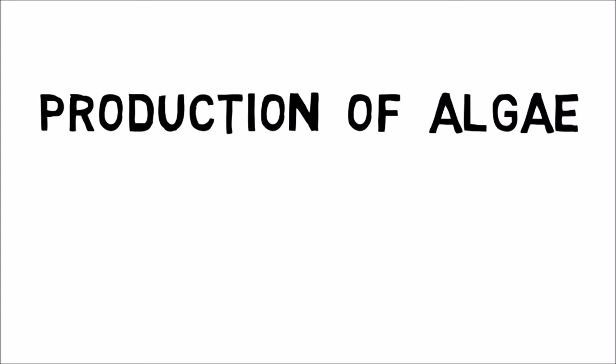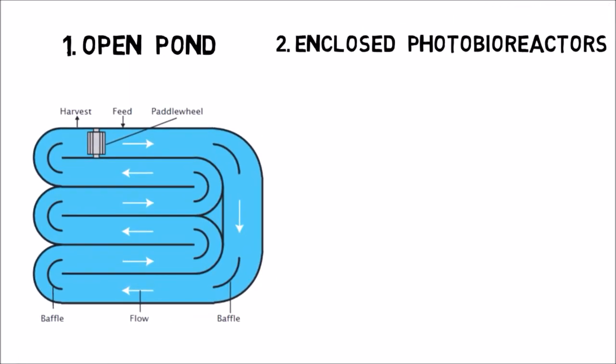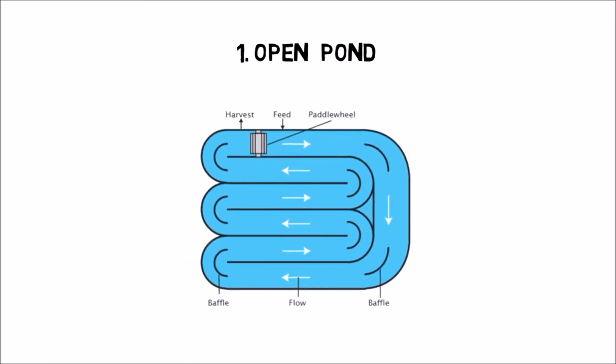Production of algae. It can be produced in two ways: 1. Open ponds. 2. Enclosed photobioreactors. For mass cultivation of micro algae open ponds are simplest and oldest ways. In them depth of shallow pond is about one foot. In them algae gets environment for nurturing similar to their natural environment.